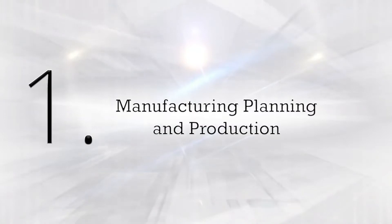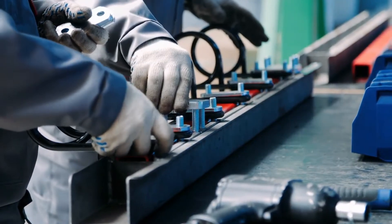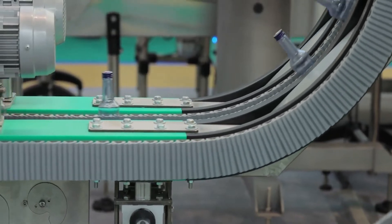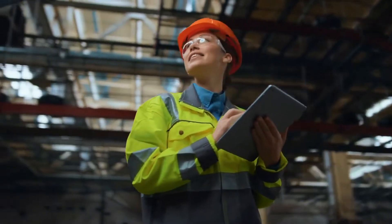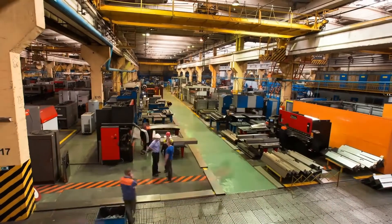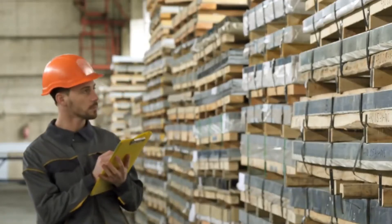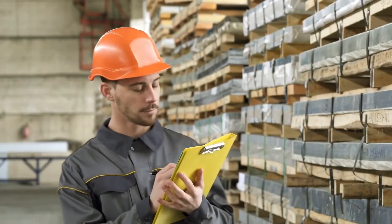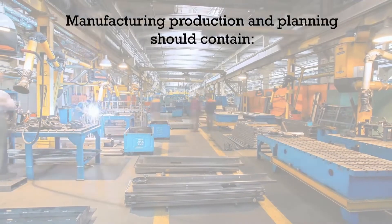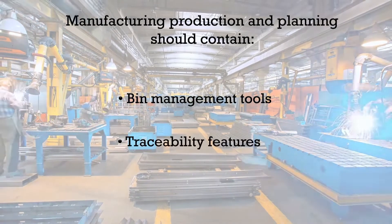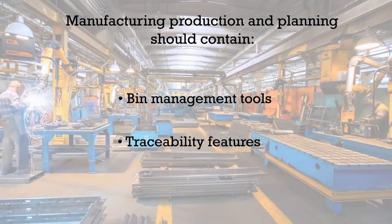The first key feature of industrial ERP is manufacturing, planning and production, which manages the factory shop floor, maximizing production output and efficiency. This includes materials requirements planning, MRP, helping ensure manufacturers have the proper materials available for production, while inventory management helps them manage their physical stock on hand. It should also contain bin management tools and traceability features that track materials and products for auditing purposes.